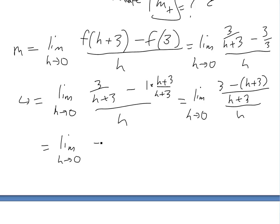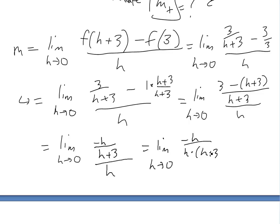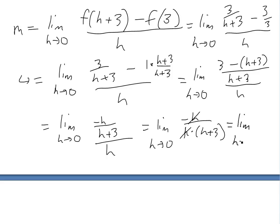This is the same as negative h divided by h times (h plus 3). The h's cancel, leaving the limit as h approaches zero of negative 1 over (h plus 3). Before, we couldn't substitute zero because it would cause division by zero in h. Now we can plug in zero: we get negative 1 over 3. This equals the slope.